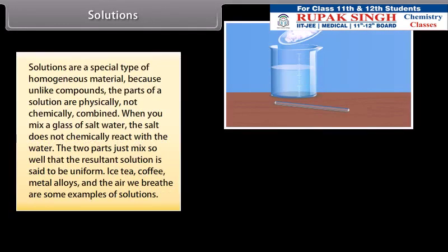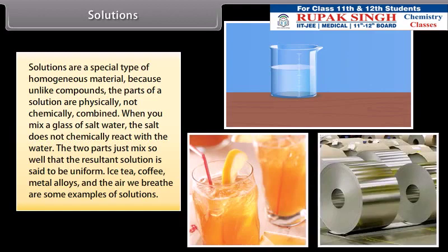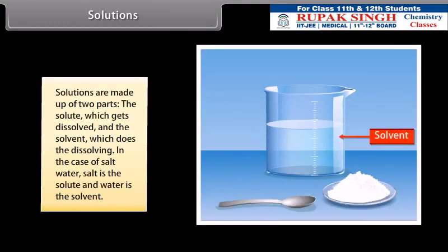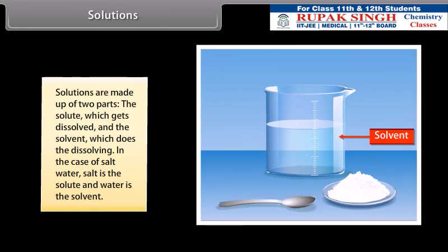Solutions are a special type of homogeneous material because, unlike compounds, the parts of a solution are physically, not chemically combined. When you mix a glass of salt water, the salt does not chemically react with the water; the two parts just mix so well that the resultant solution is said to be uniform. Ice tea, coffee, metal alloys, and the air we breathe are some examples of solutions. Solutions are made up of two parts: the solute which gets dissolved and the solvent which does the dissolving. In the case of salt water, salt is the solute and water is the solvent.